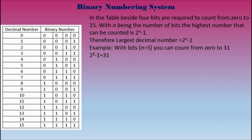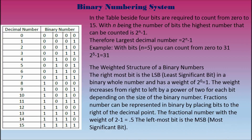Therefore, the largest decimal number equals 2 to the n minus 1. Example: with 5 bits, n equals 5, you can count from 0 to 31. That's 2 to the power of 5, which is 32, minus 1, which is 31.